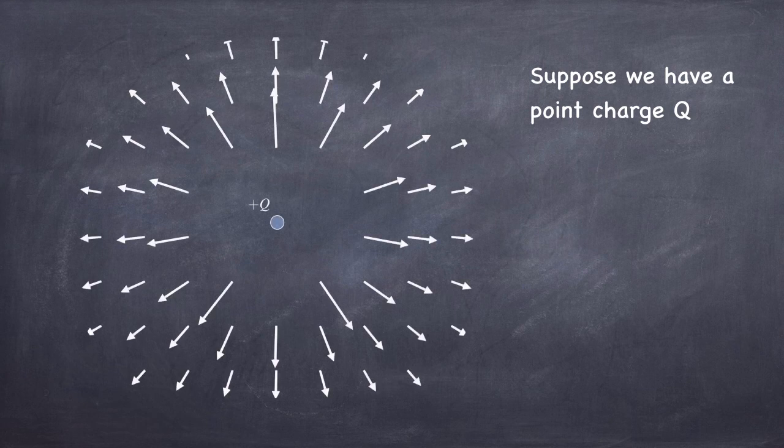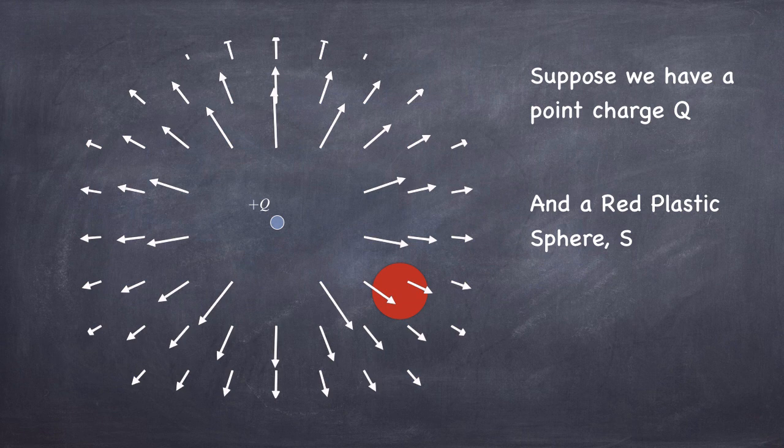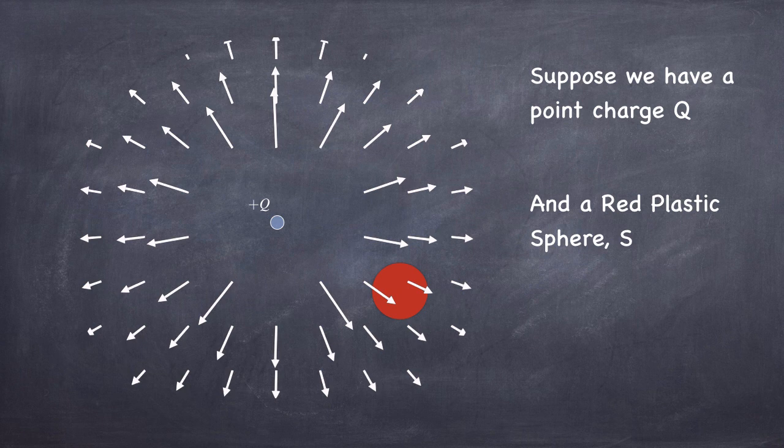Let's take an example. Suppose we have a positive test charge, capital Q, and a red sphere S. Red is just there to be able to see the thing. Now, what's going to happen as a result of this red sphere being stuck? This is like a piece of plastic, like maybe the size of a pea or a marble or something.